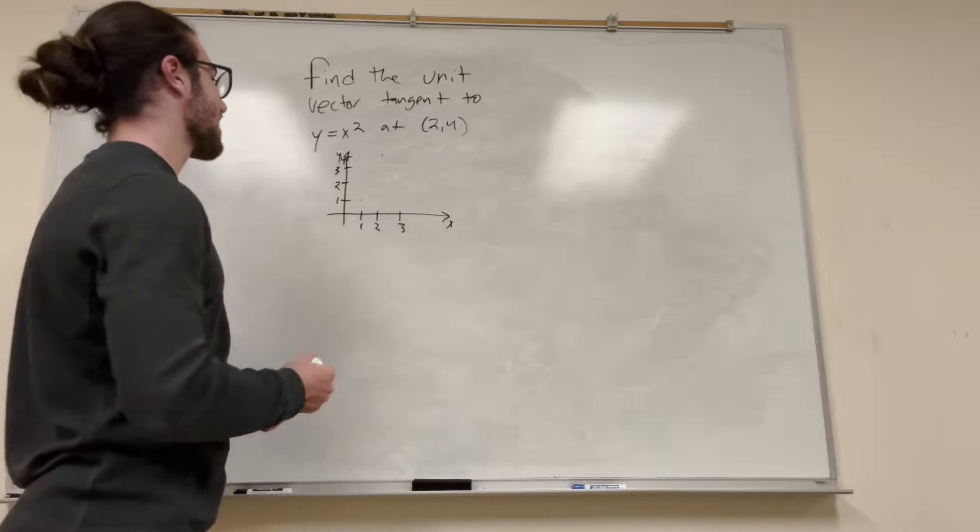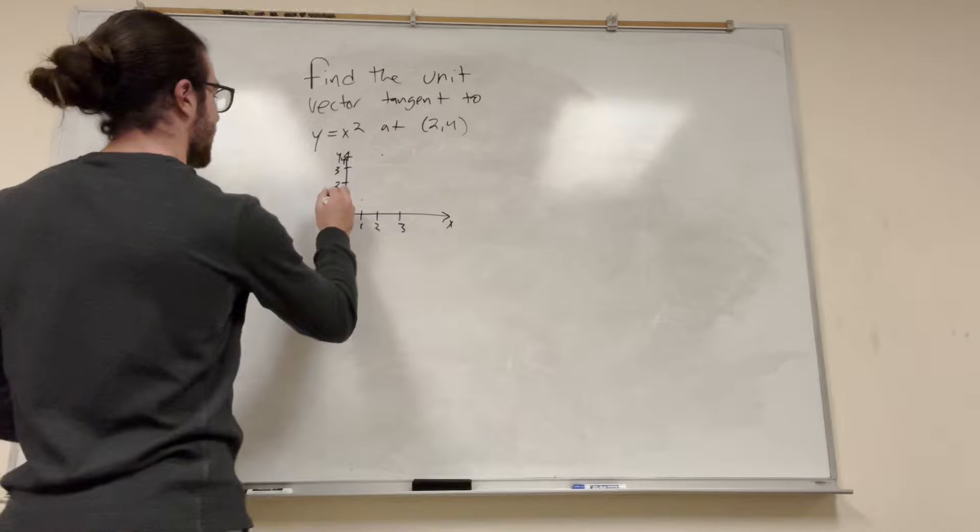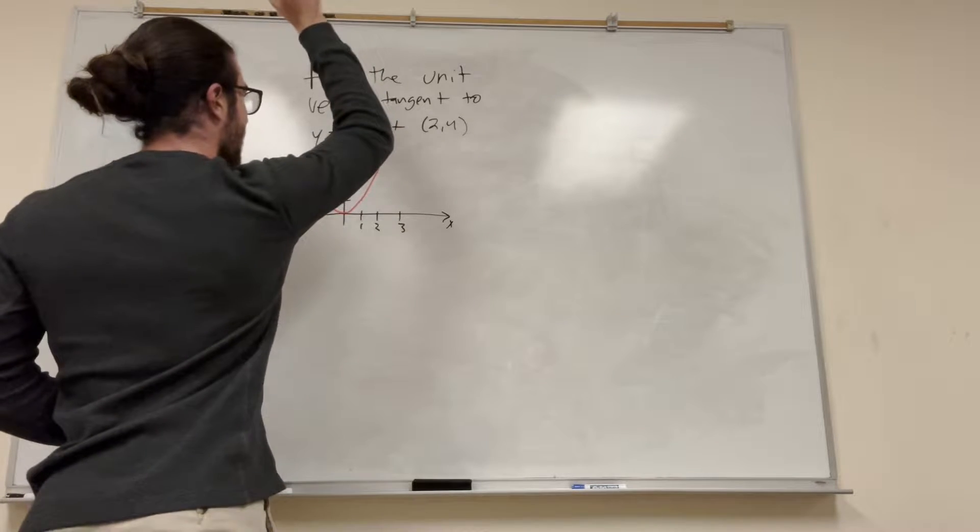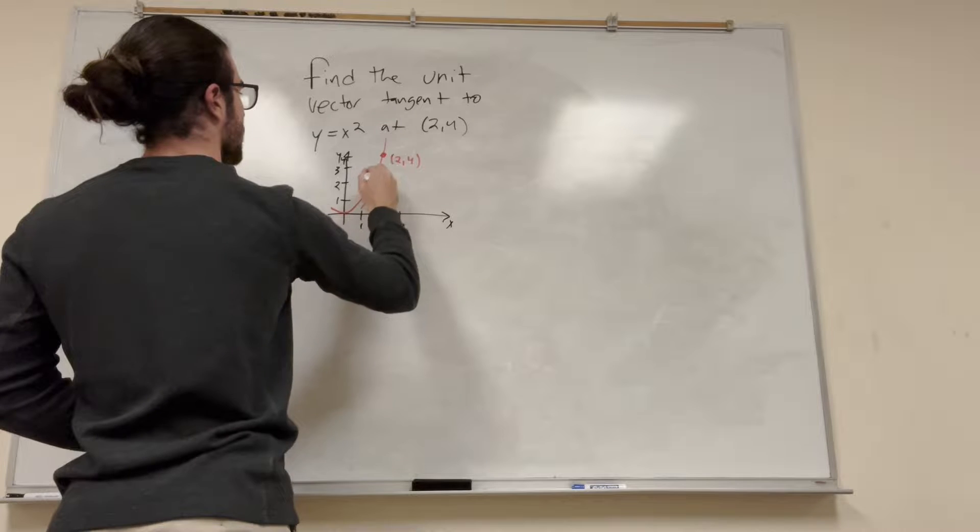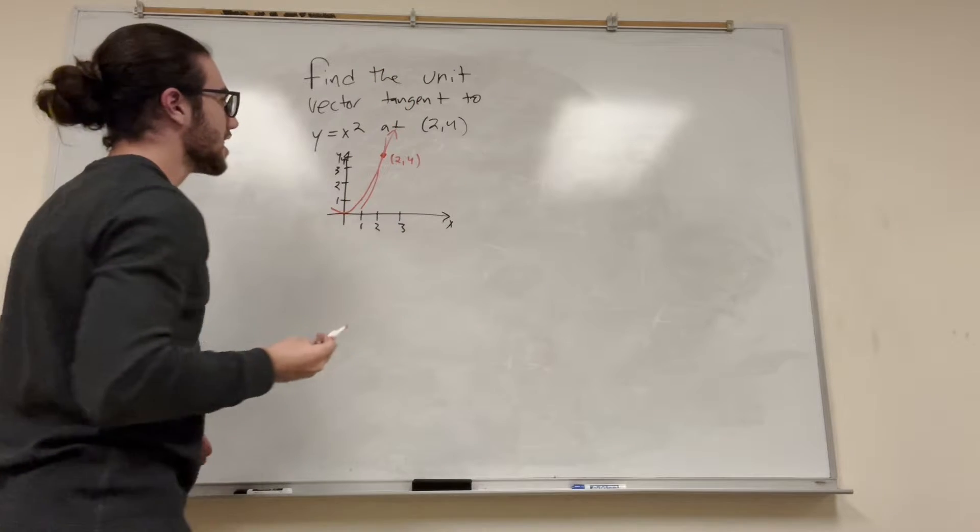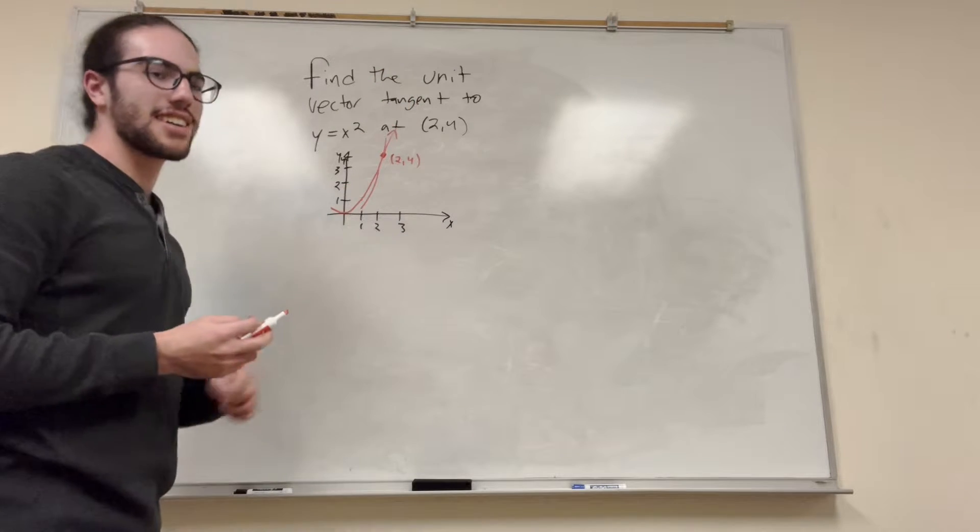So if we graph y is equal to x squared, I'm sure you guys know how to do this by the time you're in Cal 3, but it's going to look like that. And this is the point (2,4). So our tangent vector is going to look like that. So what we did already is we found a vector. It's pretty cool, right?